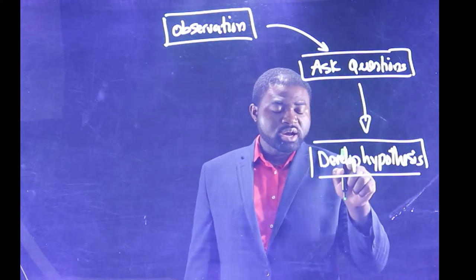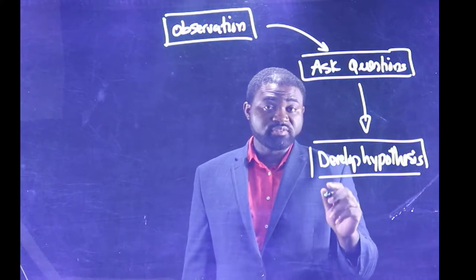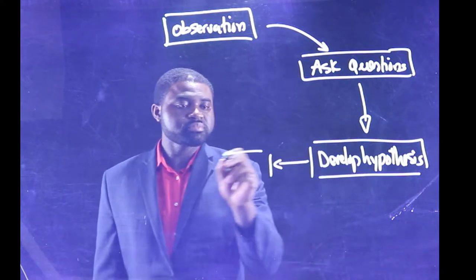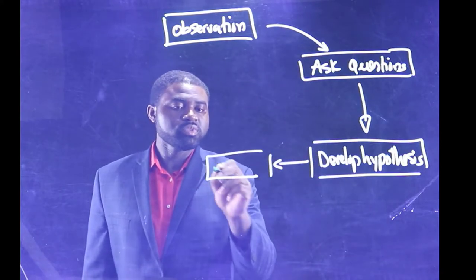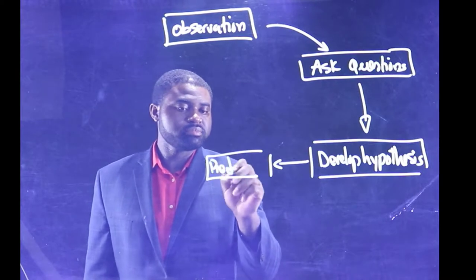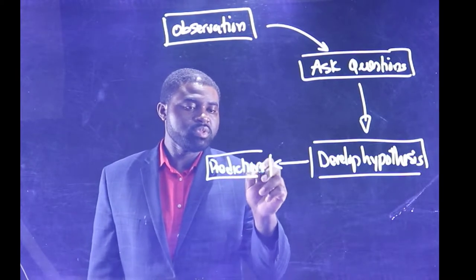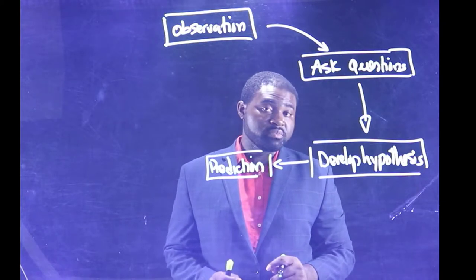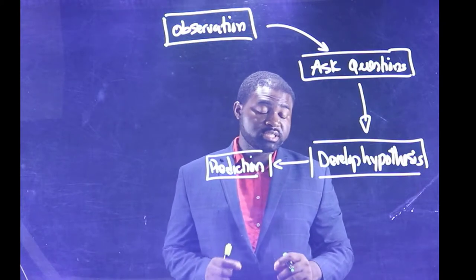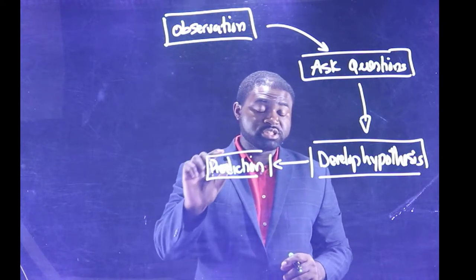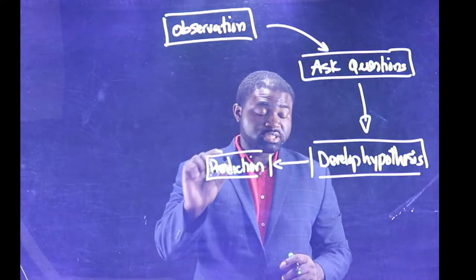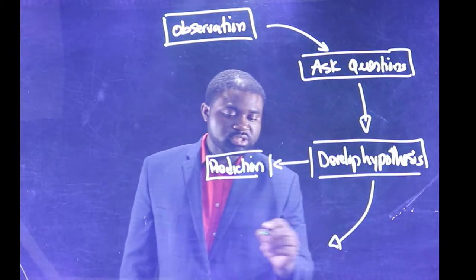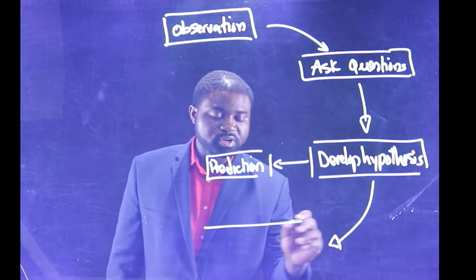A hypothesis is used to develop a prediction. All predictions must be verifiable — they must be testable. And for this prediction to be testable, we carry out experiments. So this leads to experimentation.